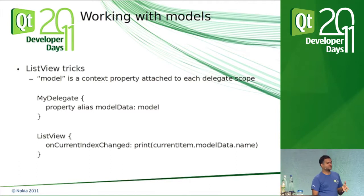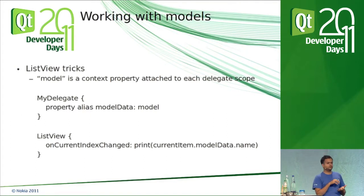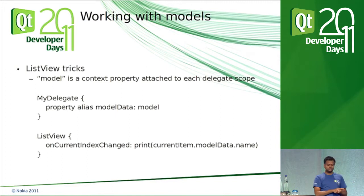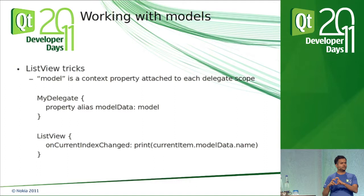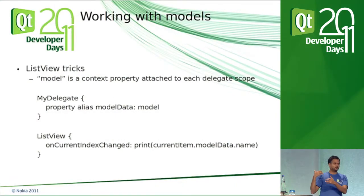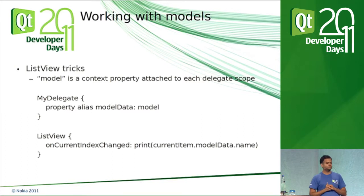This is a commonly asked question on IRC: how can you access the model data associated with a delegate from outside the delegate? Each delegate is a component, and along with each delegate's scope there is a context property called 'model'. You can expose this model property using the trick: property alias modelData: model. If you do that, you can access the model information associated with the delegate. For example, in onCurrentIndexChanged of a ListView, you can say currentItem.modelData.name to get the name role associated with that delegate.